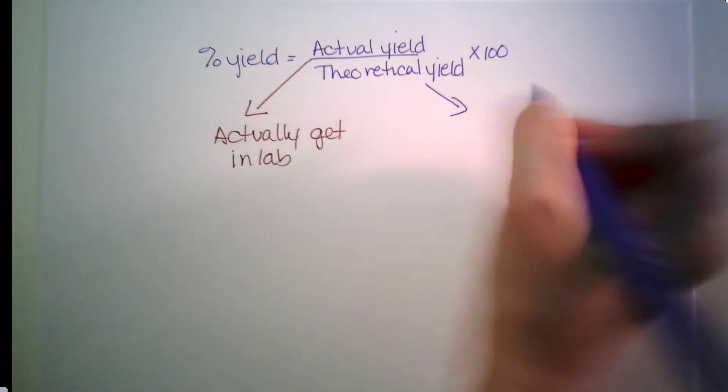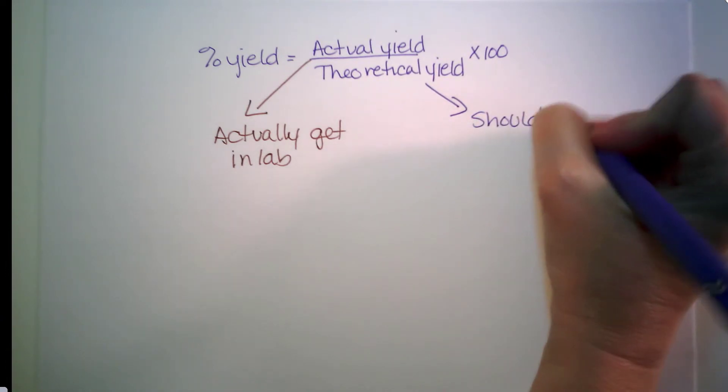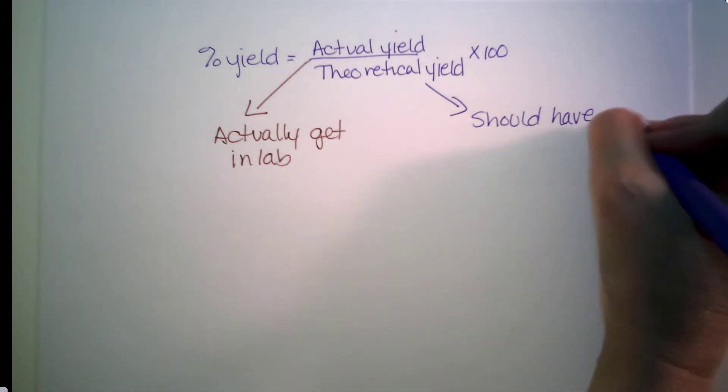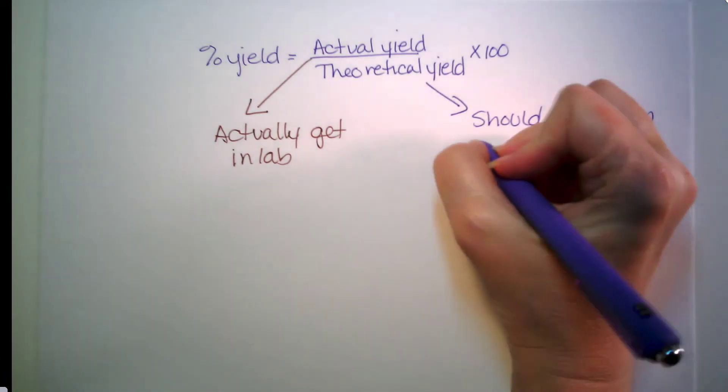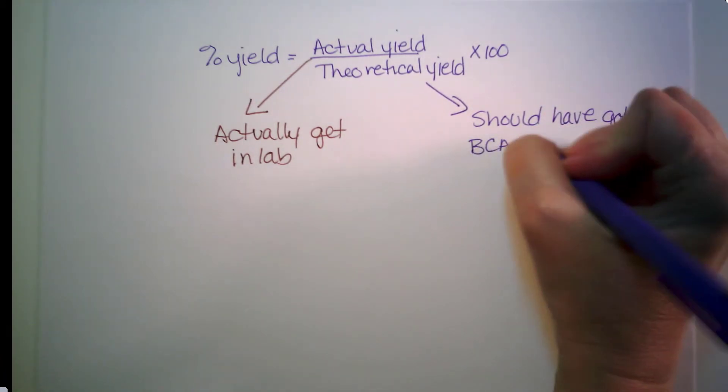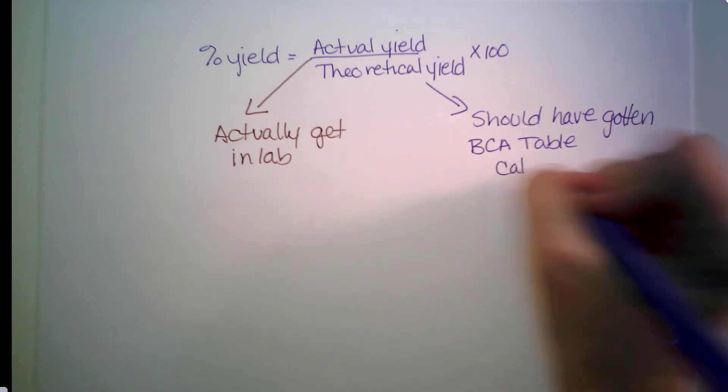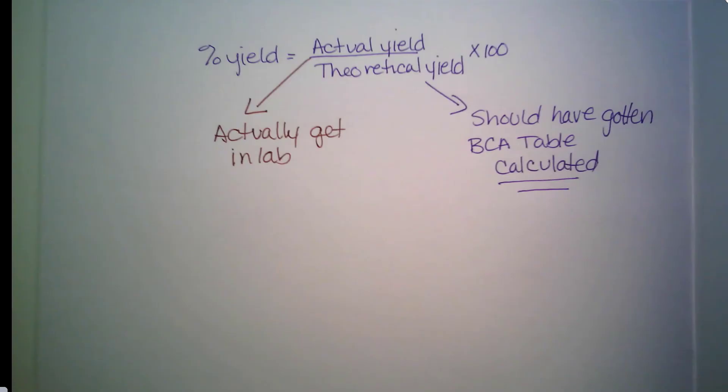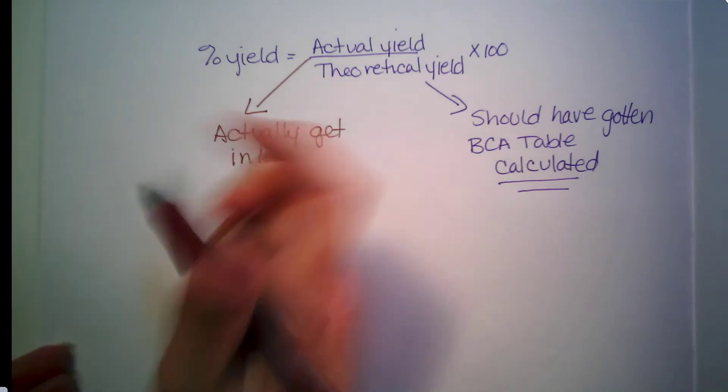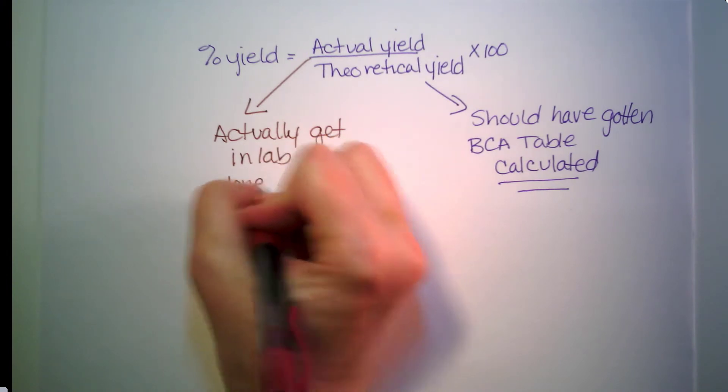Theoretical, this is what we should have gotten. The way we figure that out is we use our BCA tables. And this one is always calculated. That's key. That one is calculated. This one is done through lab.